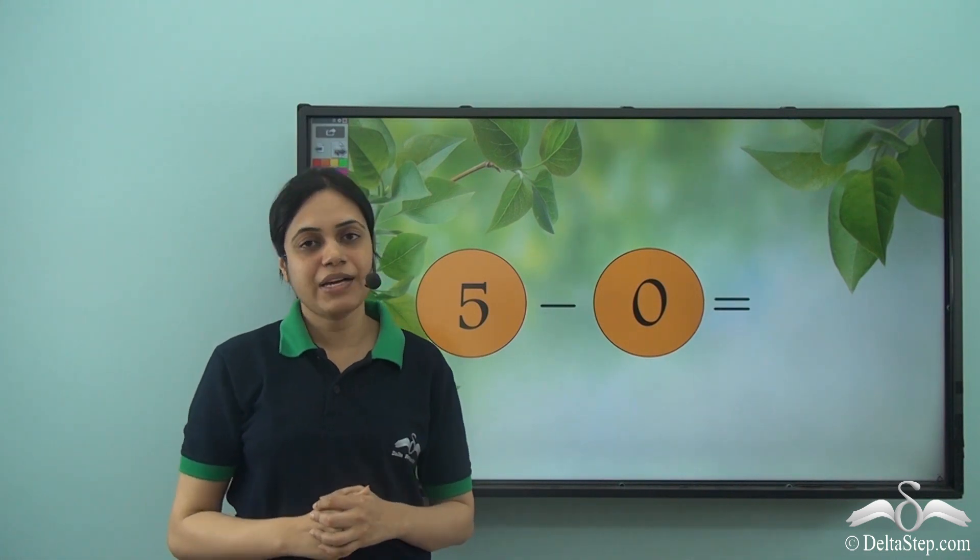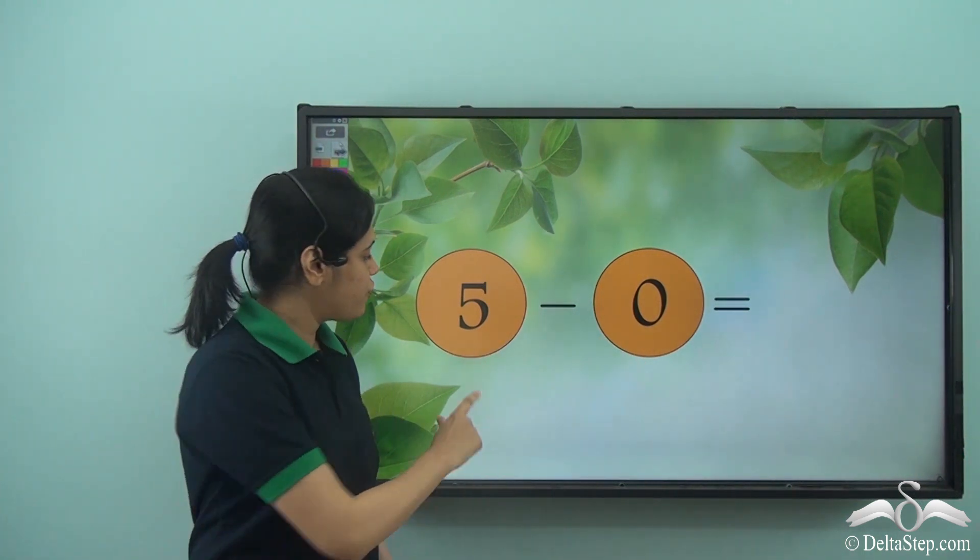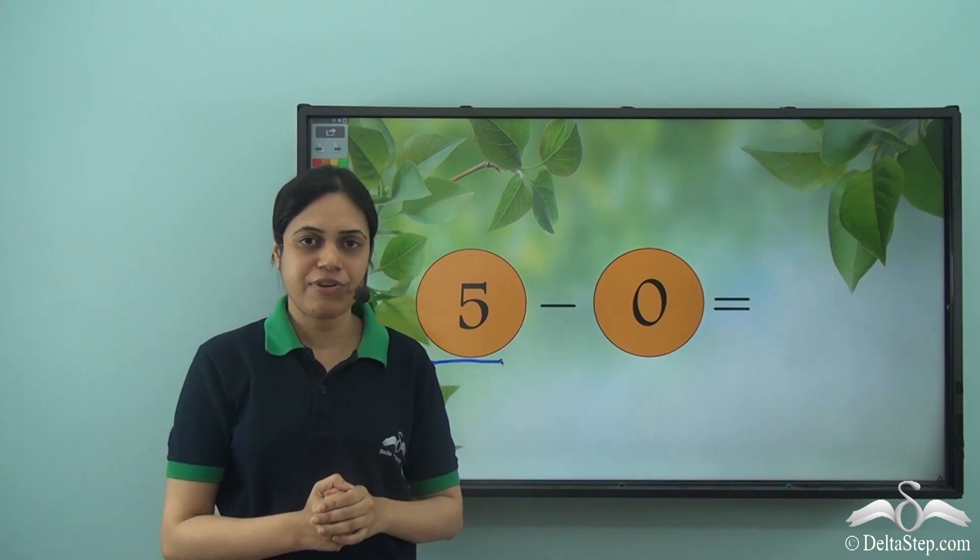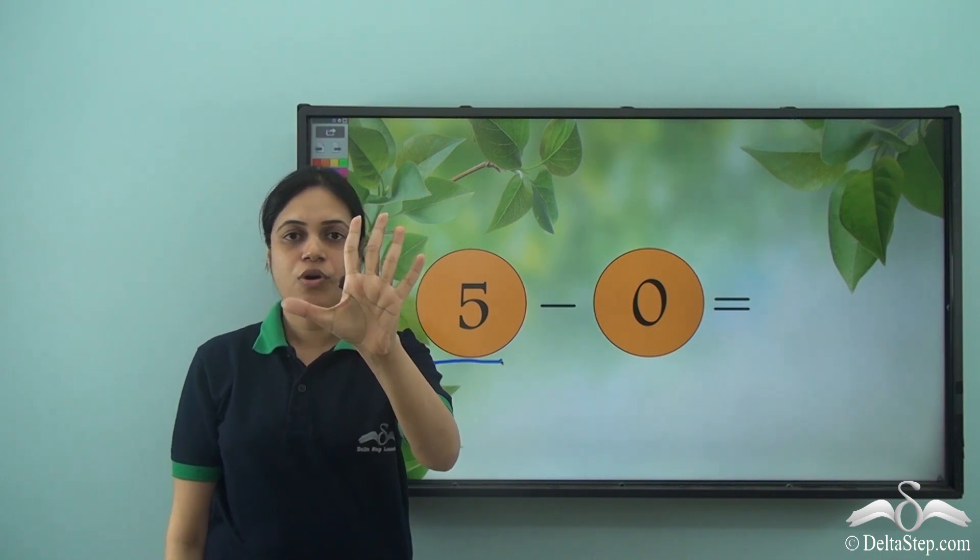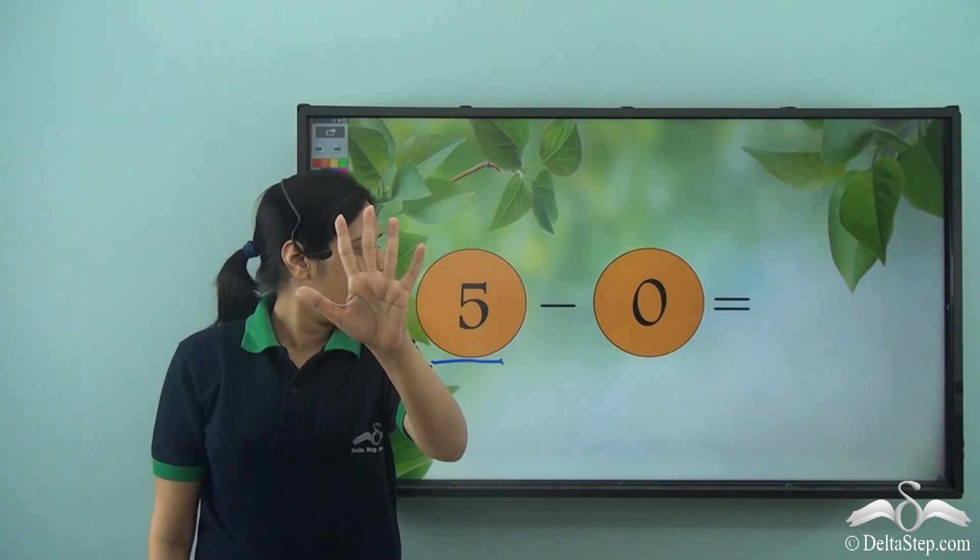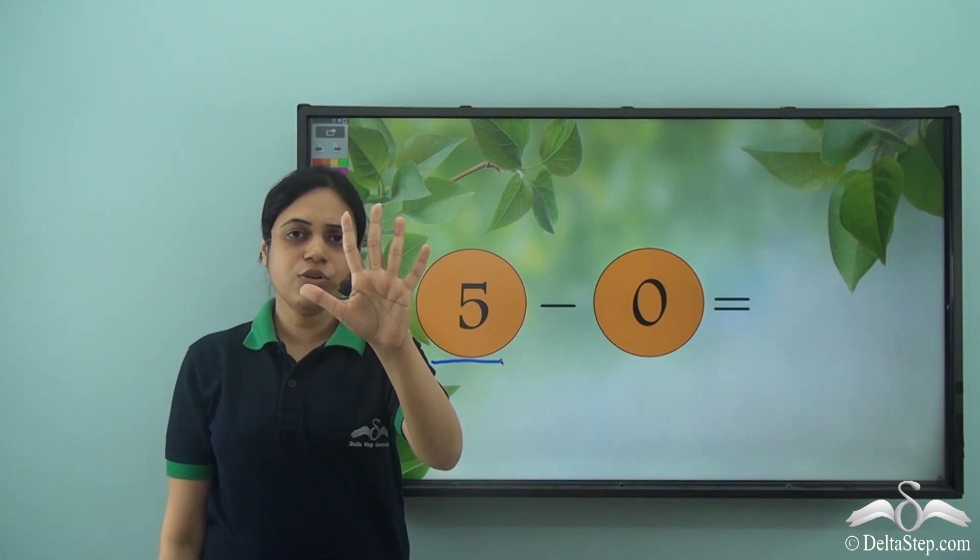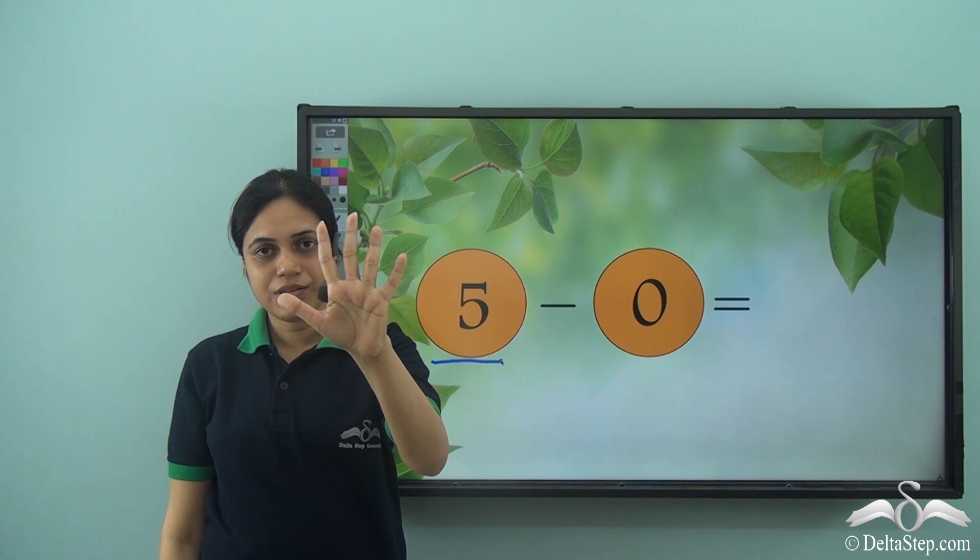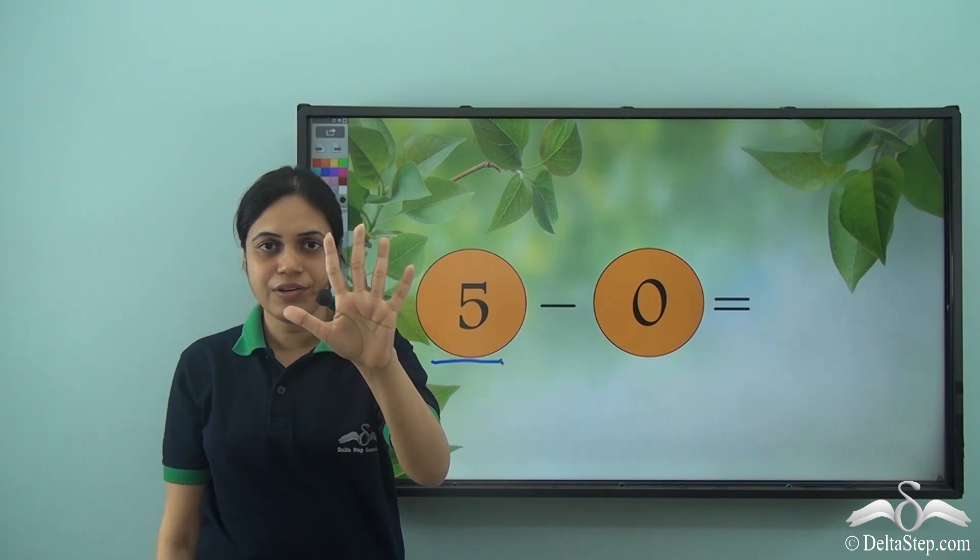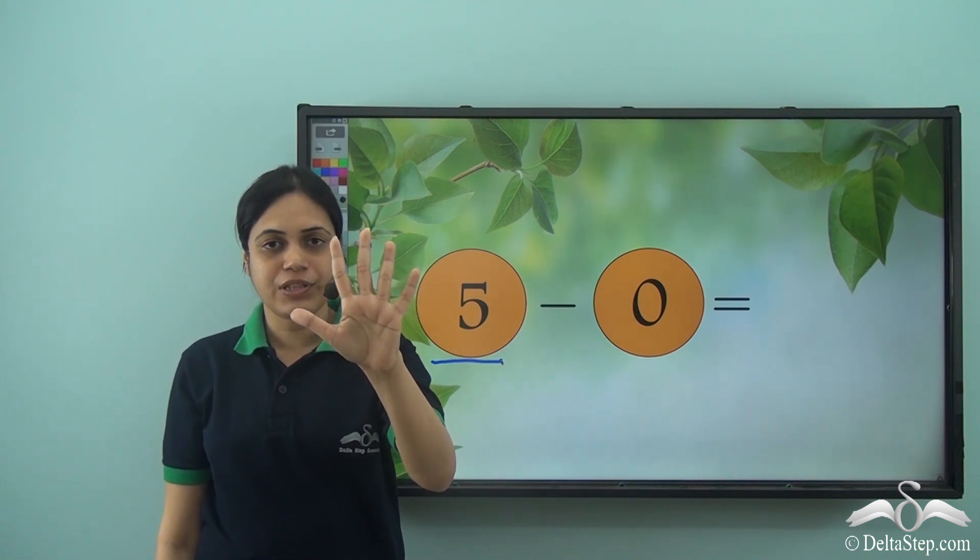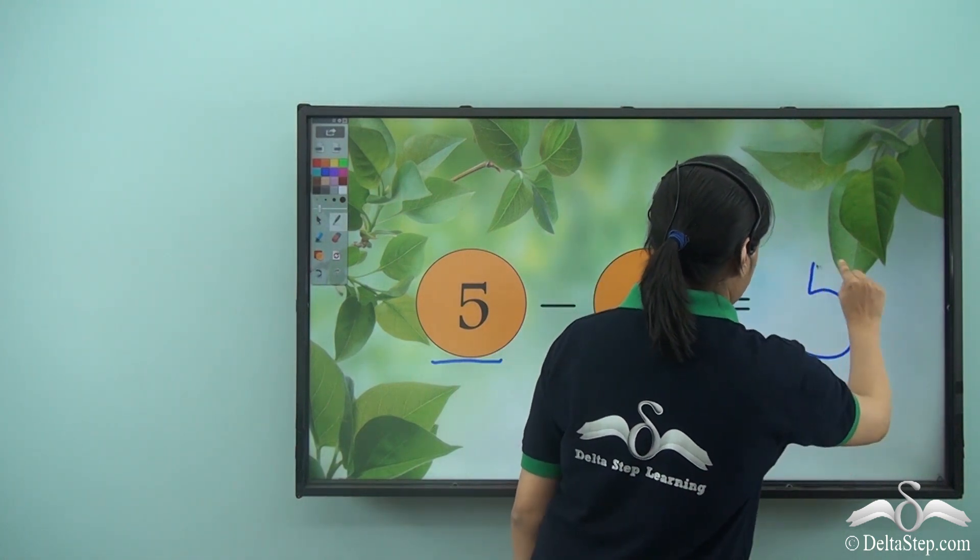Now this is five minus zero. So I need to subtract zero from five. So first I have five. So I need to open five fingers. One, two, three, four, five. These are the five fingers. And how many fingers do I need to remove? Zero fingers. What does zero fingers mean? Zero fingers means no fingers. So I don't need to close or remove any fingers. So how many fingers am I left with? Five, right? So five minus zero is five.